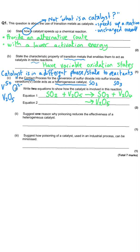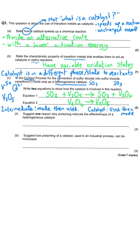In any reaction catalysed in this way, you always turn the catalyst into something new in stage one, and it turns back in stage two. The V₂O₄ produced in equation one is reused in equation two — that's a characteristic of heterogeneous catalysis. V₂O₄ is an intermediate species: it is made and then used, whereas a catalyst is used and then made. That's how we convert V₂O₄ back into V₂O₅.